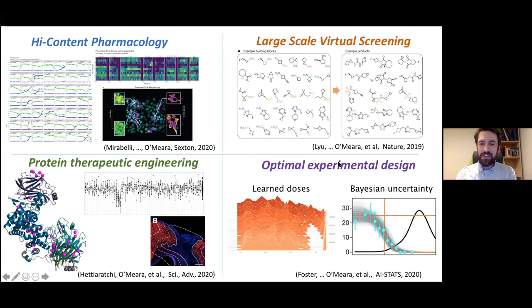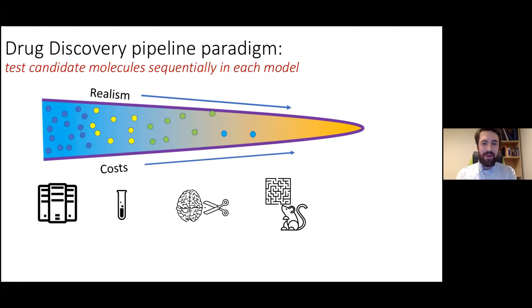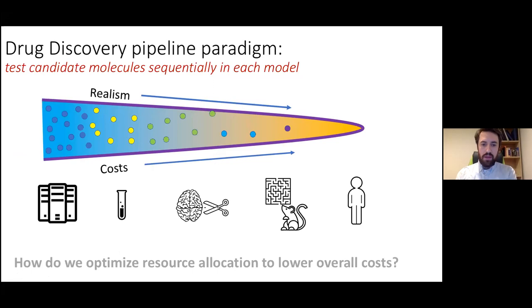Going back to recap: the lab's four focus areas are protein therapeutics, large-scale virtual screening, optimal design, and high content pharmacology. The presentation had just covered the observational-model framework, working up the hierarchy in drug discovery. Most of what will be discussed today is putting drugs onto plates and understanding how cells respond.